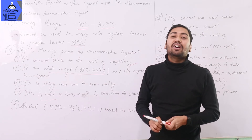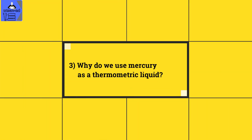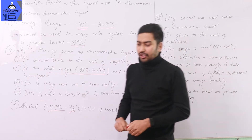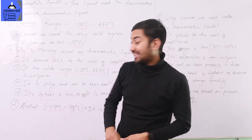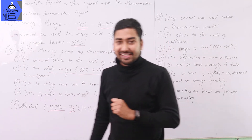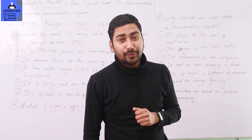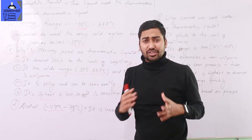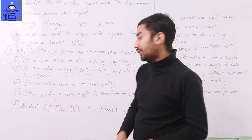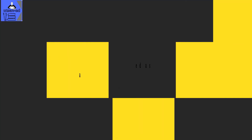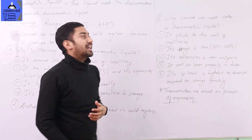Now let's go to alcohol. Alcohol has a range of minus 117 to 78 degrees Celsius, so we can still use it as a thermometric liquid with these properties.